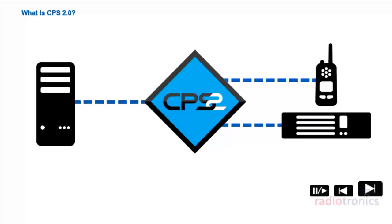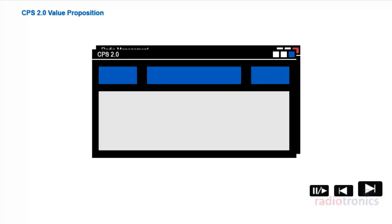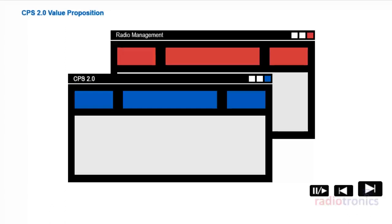MotoTurbo CPS 2.0 is a purpose-built application, focusing on the basics for provisioning needs. It provides an updated, modern interface, unified between CPS 2.0 and radio management, for ease of use and your comfort. This unified approach will also make it easier to learn and manage new feature capabilities across both of our programming platforms.